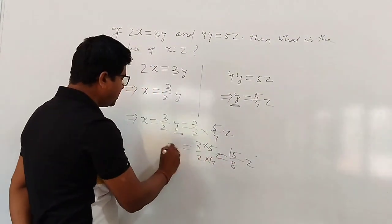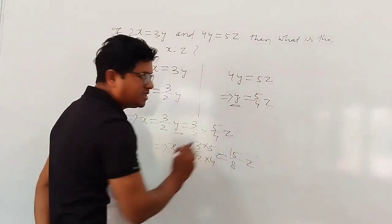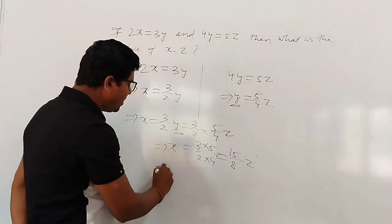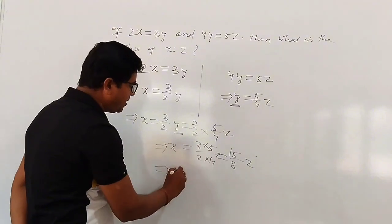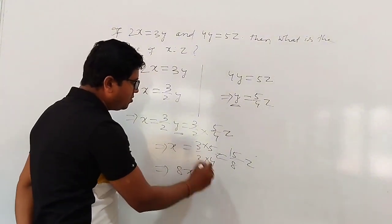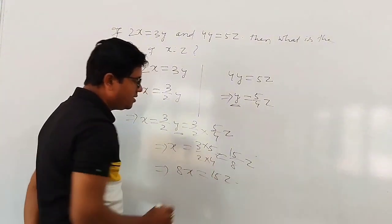See, x equals 15 by 8z. This implies cross-multiply, 8x equals 15z, but we have to calculate